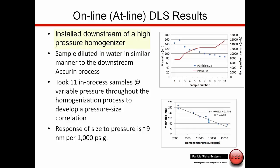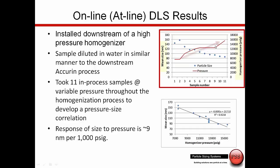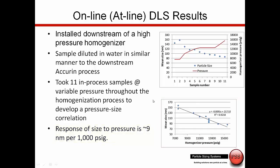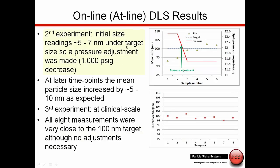The customer wanted to understand what the optimum conditions are for creating the desired particle size. The plot here shows particle size versus homogenizer pressure — the blue diamonds are particle size, the red line is pressure. As we increase the pressure, we reduce the particle size. By creating a series of trials, the customer could understand this response: effectively, every time you reduce the homogenizer pressure by 1,000 PSI, you get a change of 9 nanometers in particle size.